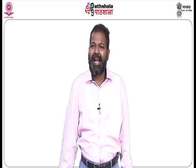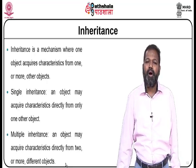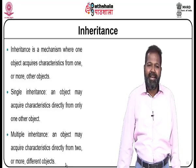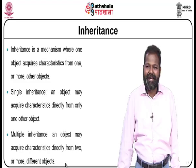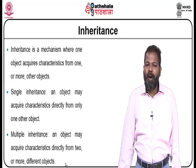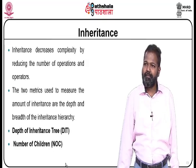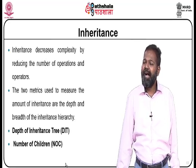One important point: when identifying a generalization-specialization hierarchy, it is a superclass-subclass relationship. All common attributes are modeled in the superclass, and a subclass is identified only if it has attributes specific to it. Inheritance is a mechanism where one object acquires characteristics from one or more other objects. Single inheritance means an object acquires characteristics from only one other object. Multiple inheritance means an object acquires characteristics from two or more different objects. There are also multi-level and hybrid inheritance types.